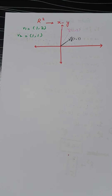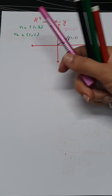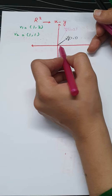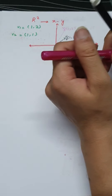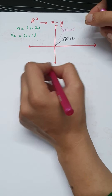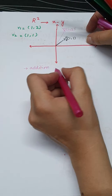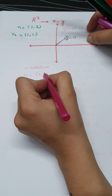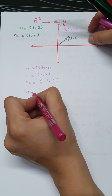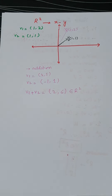To verify R2 is a vector space, we check two key properties. For addition: let V1 = (3,5) and V2 = (−1,1). The addition V1 plus V2 gives (2,6), which is representable in R2, so the additivity property holds.